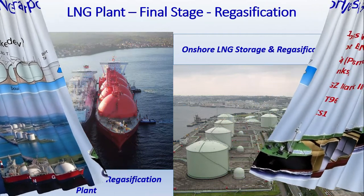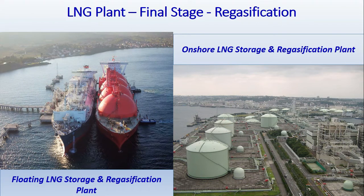Now we will see how the unloading of LNG takes place. LNG is received at two types of regasification plants: one is the floating LNG storage and regasification plant, and the other is the onshore LNG storage and regasification plant. Each of these has its own advantages and disadvantages.